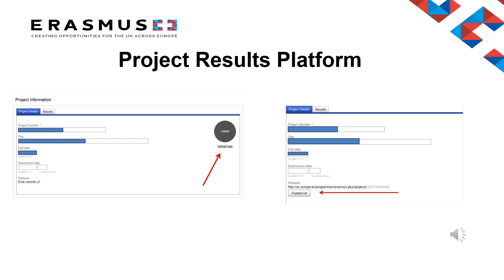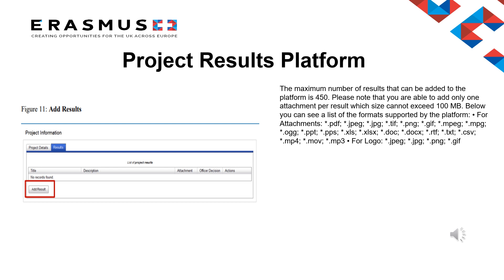You will be able to upload your project logo and website. Upload a logo and input a website dedicated to the project; if you don't have a separate website, add a dedicated page on your school website and provide that link. The project website is the only result that becomes publicly available during the lifetime of the project — as soon as you click the Publish URL button, the website will be published in your project card. All other results, including the project logo, will be published after being reviewed by your project officer during the final report assessment. For each result, you will need to create a separate entry.